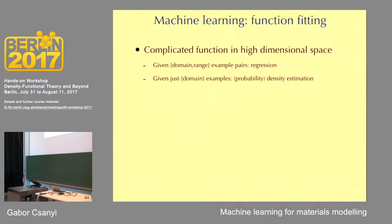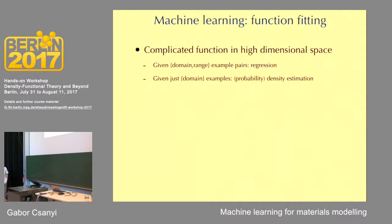That will be the topic of today's talk. But there's another kind of machine learning when you only get examples of the domain. Imagine a probability distribution in a very high dimensional space, and instead of giving you the probability density at certain places, I just give you samples from the probability density. Your job is to reconstruct the probability distribution — in places where you get a lot of samples, the probability is obviously high. That's called density estimation or probability density estimation, and we will not be concerned with it today.